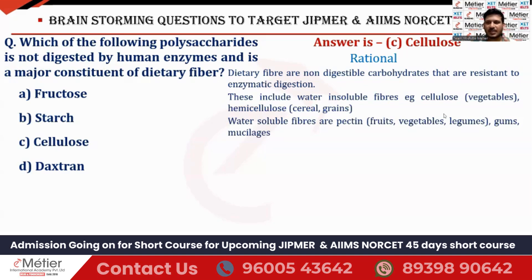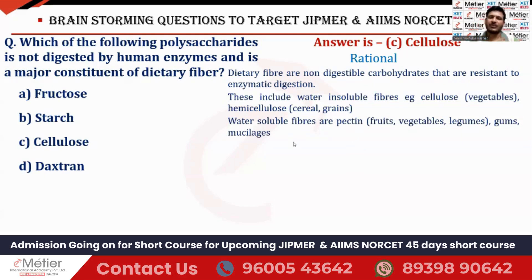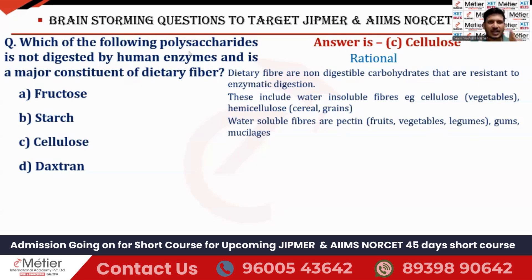An example of cellulose is vegetables, and an example of hemicellulose is cereals and grains — both are water-insoluble dietary fibers. Water-soluble dietary fibers include pectin, gums, and mucilages. The best example of pectin is fruits, vegetables, and legumes. So, as per the question, polysaccharides not digested by human enzymes include cellulose, hemicellulose, pectin, gums, and mucilages. Only cellulose was listed in the options, which is why we selected option C.